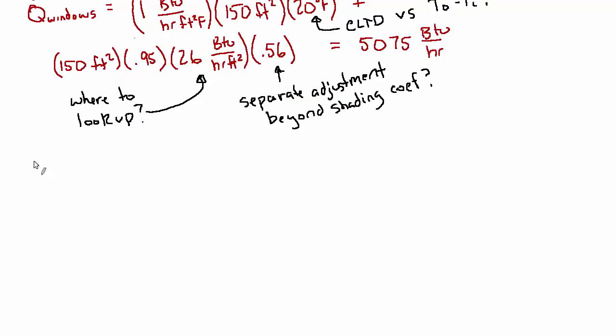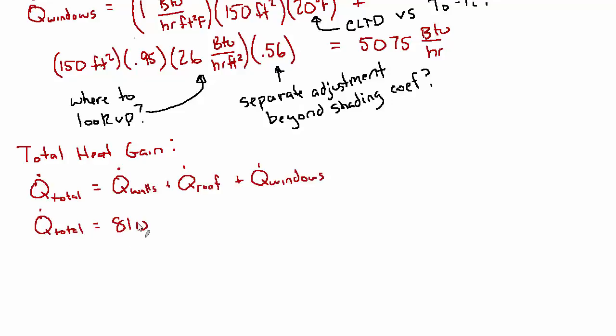Okay, so let's now go for the total heat gain. The total heat gain will be the sum of the walls, roof, and windows. We're neglecting the floor. And the values we found were 8,107 BTUs per hour, 10,212, and most recently for the windows, 5075. Which gives a total of 23,394 BTU per hour. And that is the answer to part A.